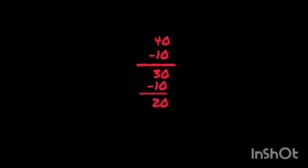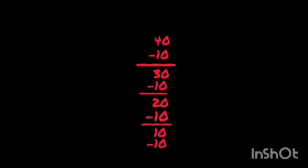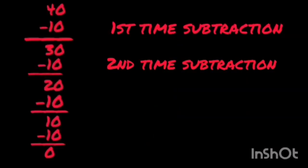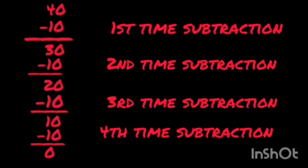Again for repeated subtraction, we subtract 10 from 20. 20 minus 10 is equal to 10. Now we are left with 10. We subtract 10 again: 10 minus 10 is equal to 0. How many times have we subtracted 10? Let's count: 1, 2, 3, and 4 — 4 times. So 40 divided by 10 is equal to 4.